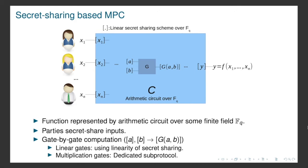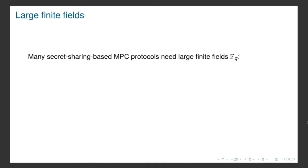Often the secret sharing schemes we use are linear, meaning that we can handle the linear gates using the linearity of the secret sharing scheme, so they are fairly easy. However, the multiplication gates are often more difficult and require a more dedicated sub-protocol. When we say that the arithmetic circuit should be over some finite field, there are actually some limitations on which finite field we can use, because many secret sharing based MPC protocols need a large finite field.